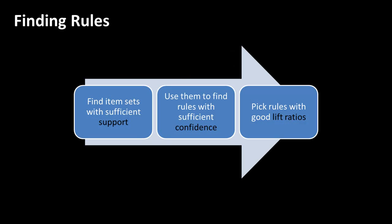To summarize, we first find item sets which have a threshold level of support. We use them to find rules in which we have sufficient confidence. And then we pick rules which have good lift ratios.